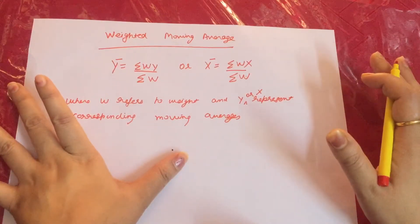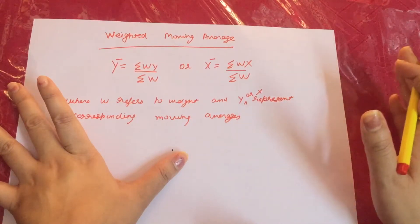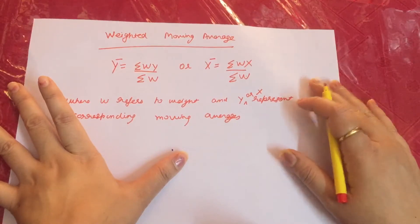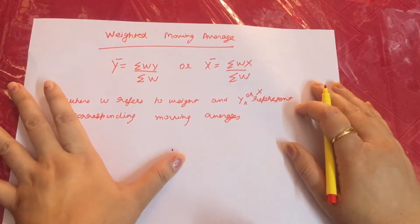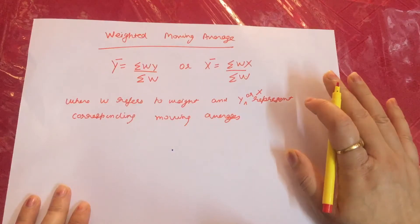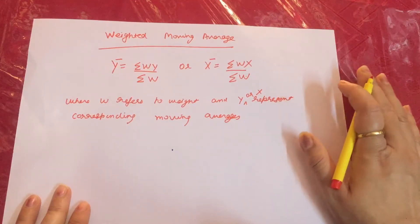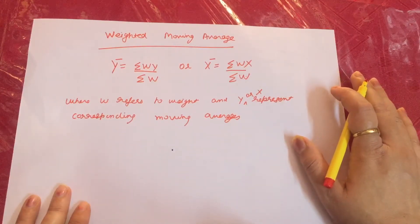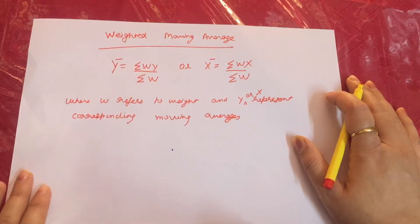As the name suggests, in weighted moving average we have weights assigned, and then the calculation will be the same as we do in simple moving average. If we have a 3-yearly weighted moving average, then we have to do 3-3 grouping, and the procedures will be the same as in simple moving average.